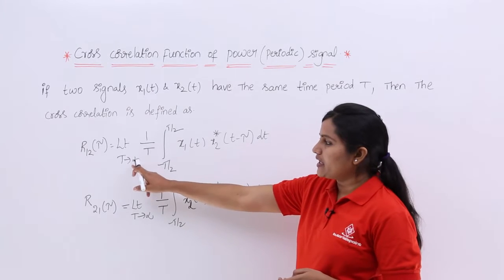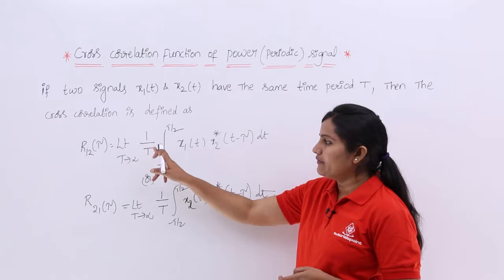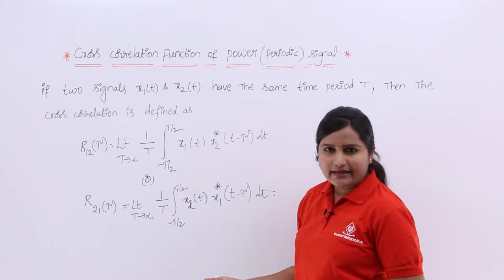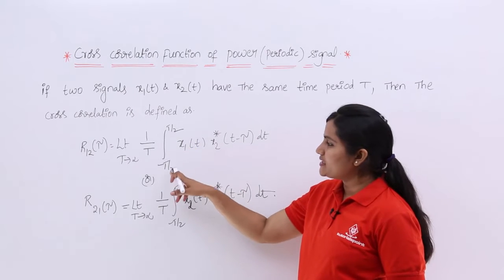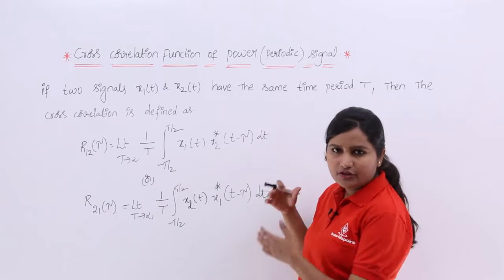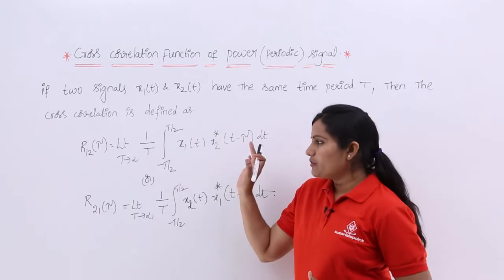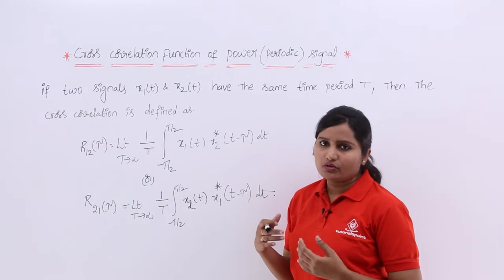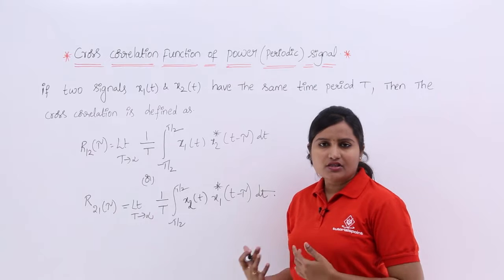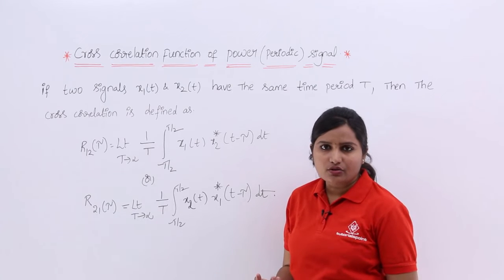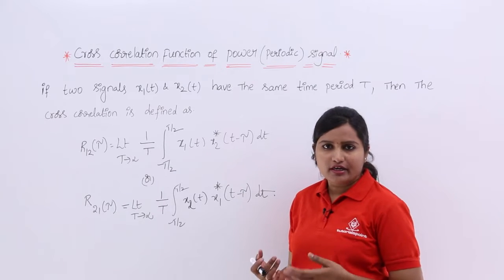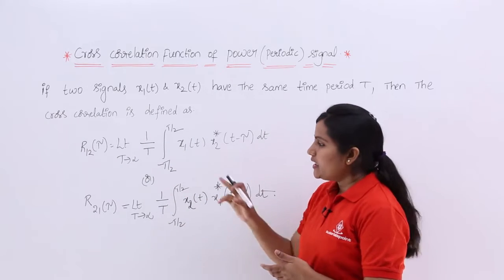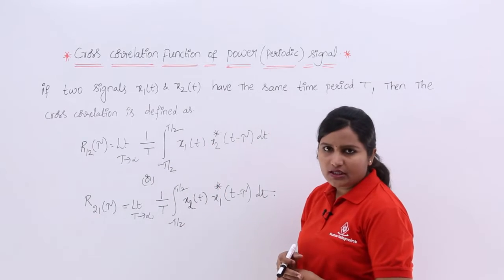Except here we have a limit T tending to infinity multiplied by 1/T. The energy signal equations have limits from minus infinity to infinity. For power signals, when calculating cross correlation — or auto correlation — you need to consider the limit T tending to infinity, 1/T, integral from minus T/2 to T/2.